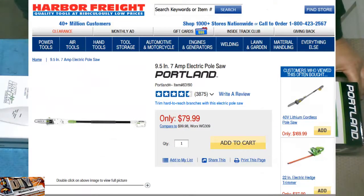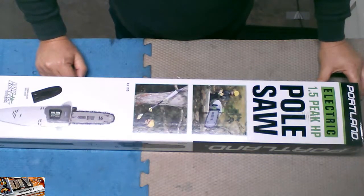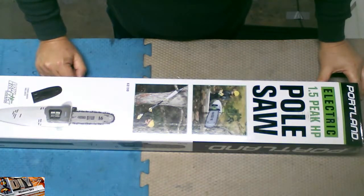1.5 peak horsepower pole saw. It's 120 volts AC, 7 amps. The bar is 9.5 inches. The handle extends from 6 feet to 8 feet 10 inches. And the model number is 63190.